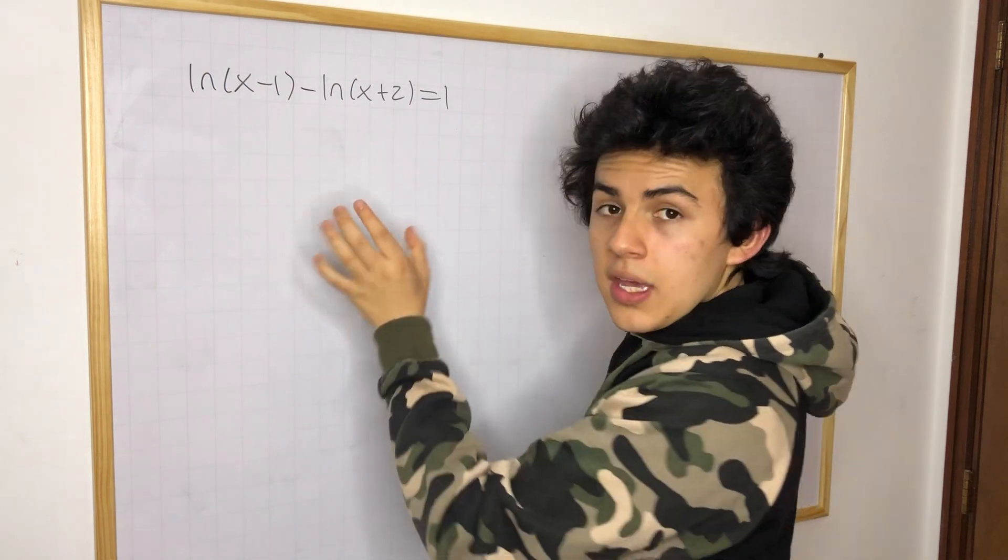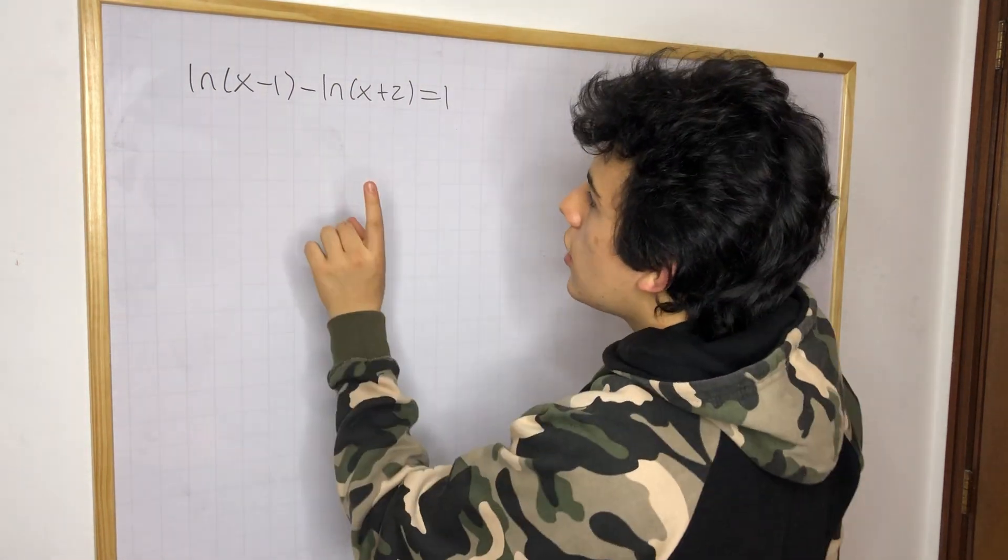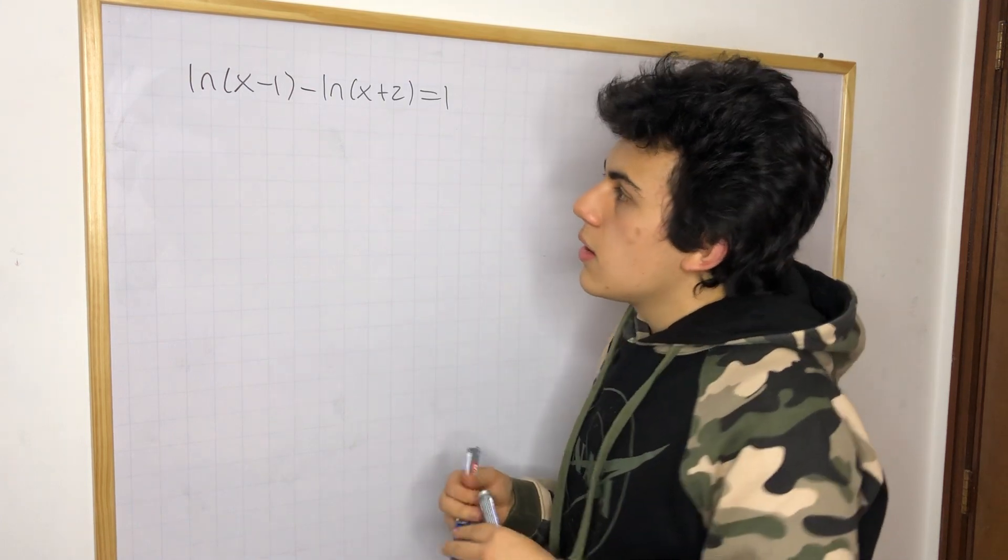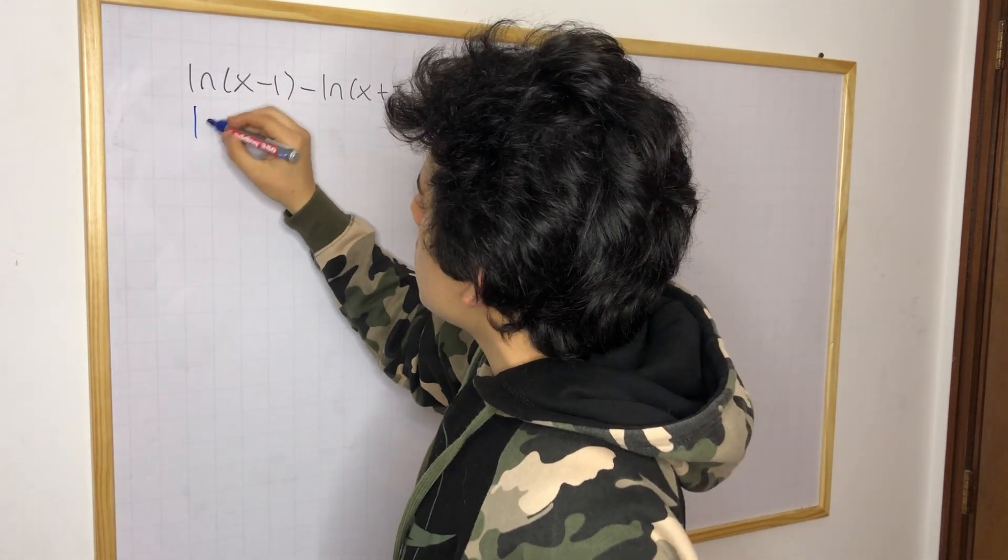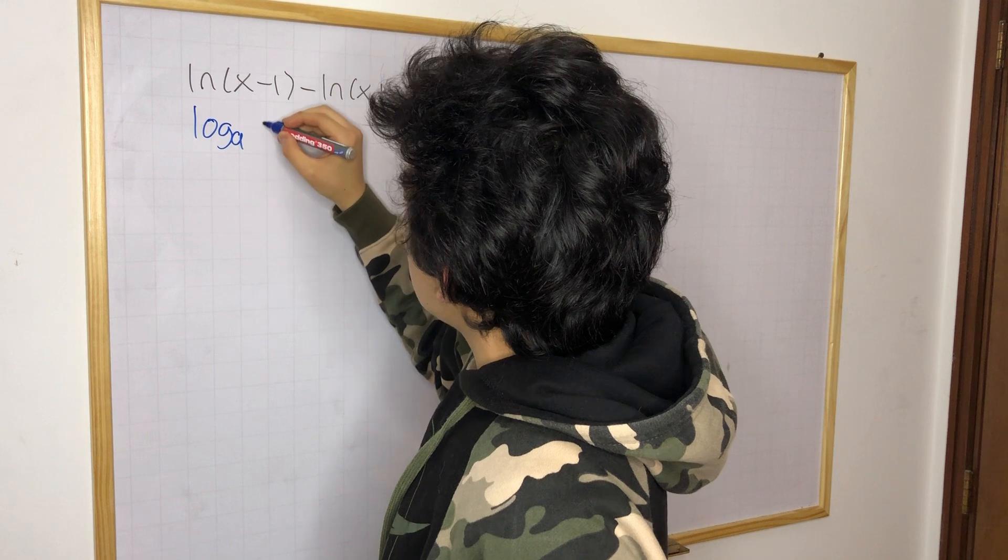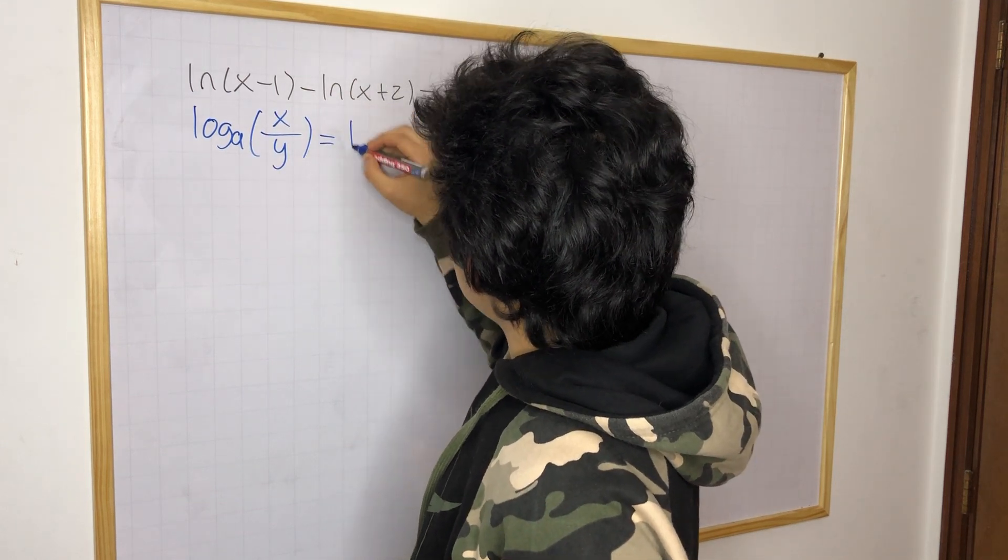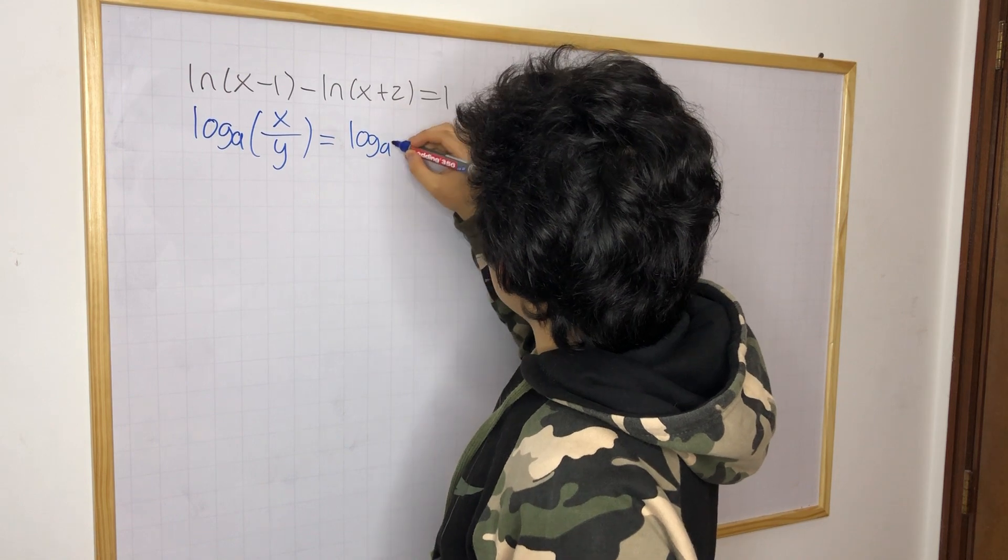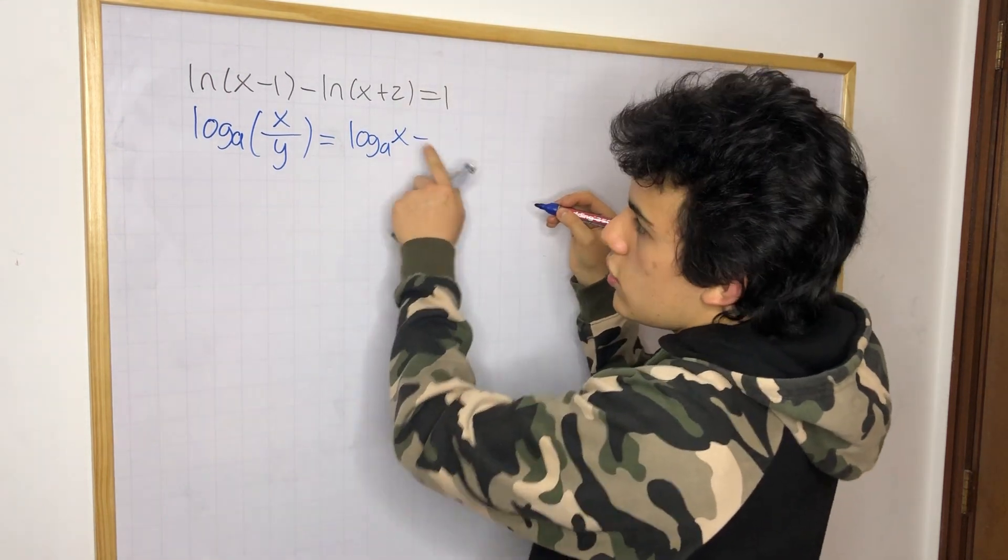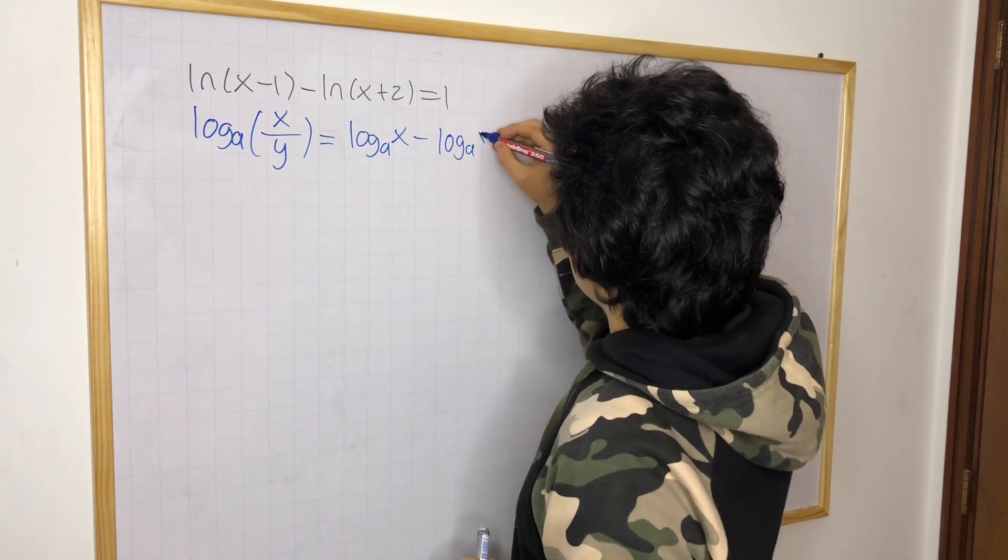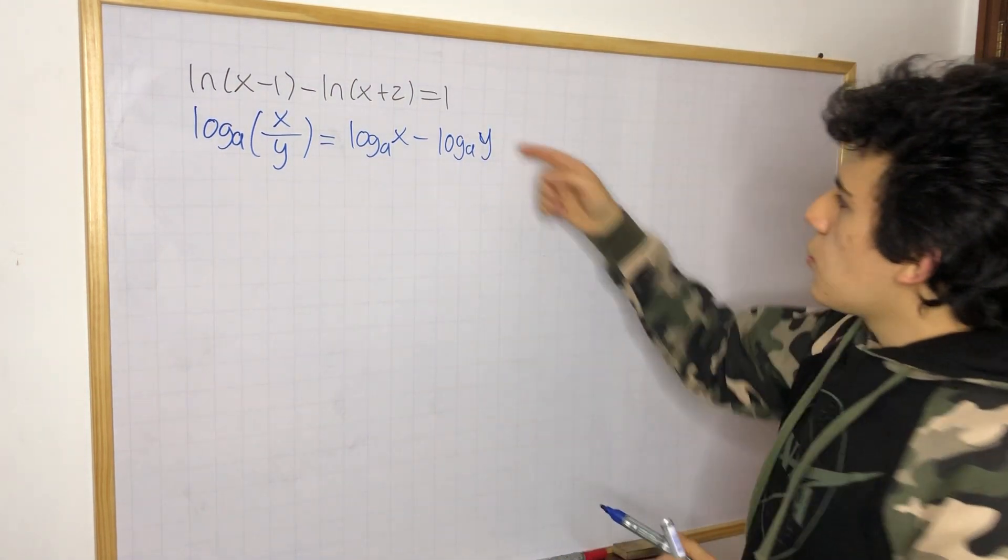We can see that the two logarithms that we have have the same base, so we can do something with them. And in this case, we need to recall a rule of logarithms that is this one. Log base a of x over y is equal to log base a of x minus, remember you need to subtract because you are dividing, log base a of y. This is y.